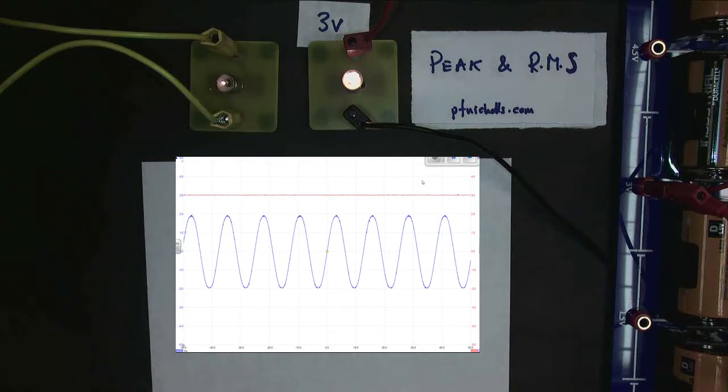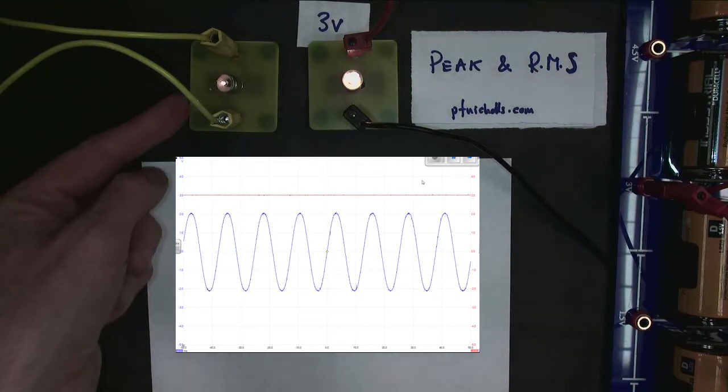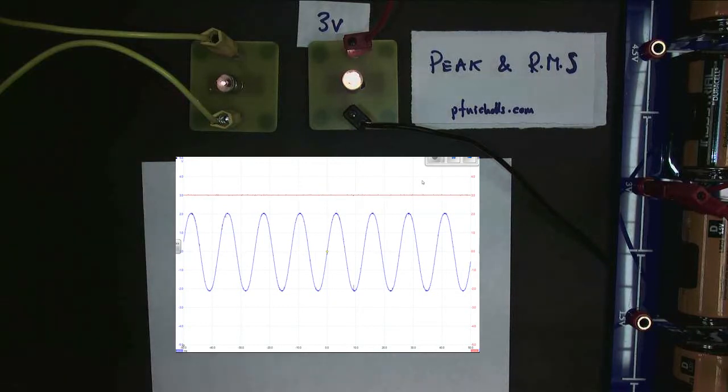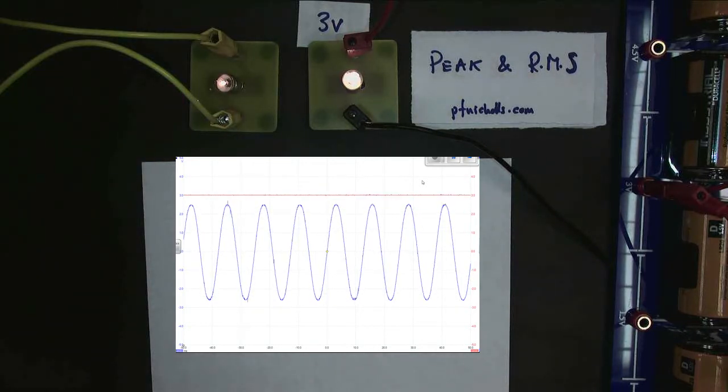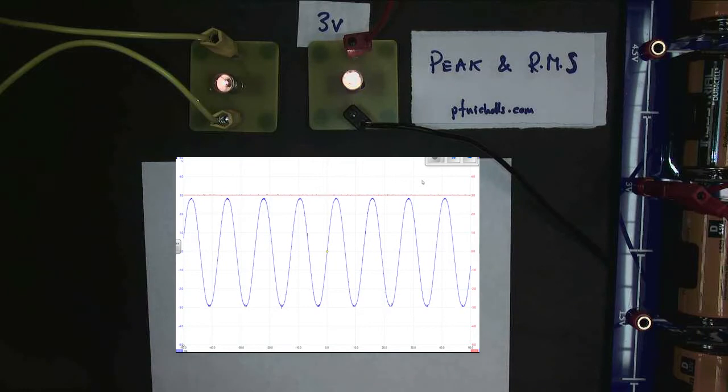Now my question is: what value of AC do I need to make the bulbs glow at the same brightness? Well, at the moment they're clearly not the same brightness. This is much dimmer but the AC is a lot smaller value. Let's increase it until the AC is touching the red line. So now the AC and the DC are the same maximum value. The peak level of the AC is the same as the DC, three volts. Are the bulbs the same brightness?